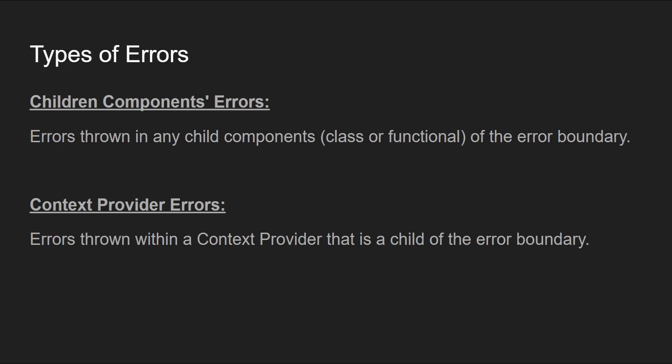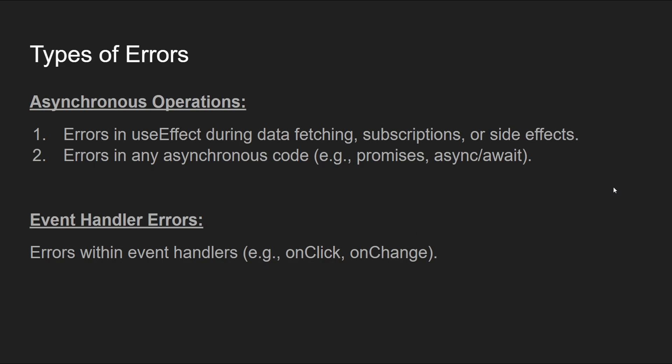Next are context provider errors — errors thrown within a context provider which is a child of the error boundary. Many of you might be hearing these error classifications in React for the first time. The reason I've classified them this way is to show exactly the situations where an error boundary makes more sense and where a custom hook makes more sense to handle errors.